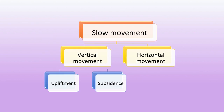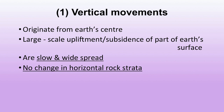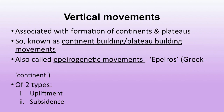Slow movements are of two types: vertical and horizontal. Vertical movement originates from earth's center and involves large-scale upliftment or subsidence of parts of the earth's surface. Upliftment means the earth's surface rises; subsidence means it goes down. It is slow, widespread, and there is no change in horizontal rock strata. Vertical movements are associated with formation of continents and plateaus, so they are also known as continent-building or plateau-building movements, also called epirogenetic movements — 'epiros' in Greek means continent.